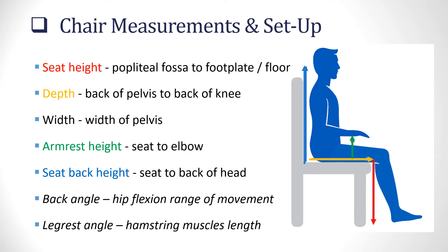You have Seat Height — from the popliteal fossa at the back of the knee to the footrest or floor, depending on where that support is coming from. Depth, from the back of the pelvis to the back of the chair. Width — the width of the pelvis within the chair. Armrest height, from the seat to the elbow. Seat back height, from the back of the head down to the seat base. Two other measurements to really consider are back angle, which is essentially hip flexion range of movement, and the leg rest angle, which is based on the hamstring's muscle length.